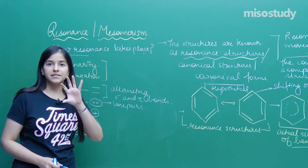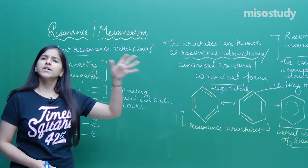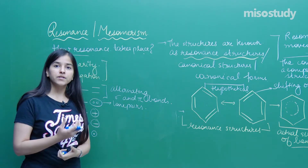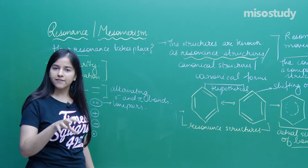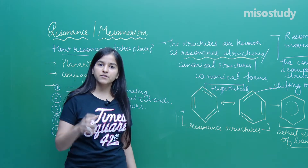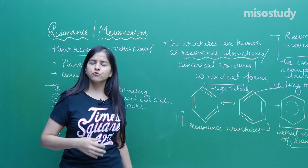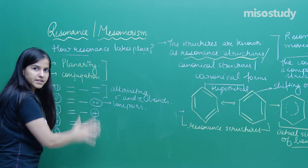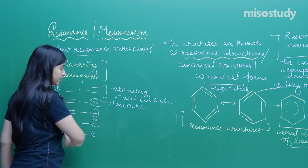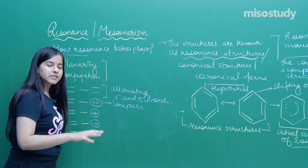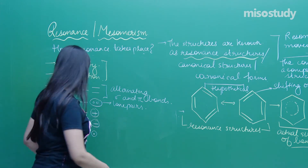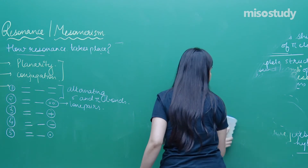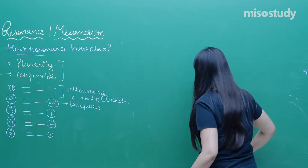How does resonance take place? It is the movement of electrons, but there must be a driving force. These conditions provide that driving force which moves electrons continuously within a system. Let me take the first example — double-single-double — using 1,3-butadiene, an aliphatic system. Pi electrons move, so there must be a driving force.